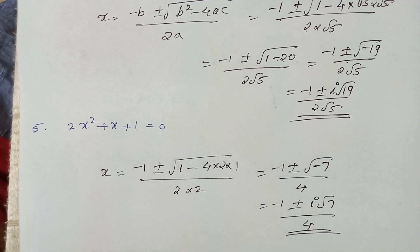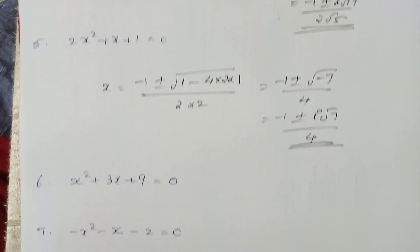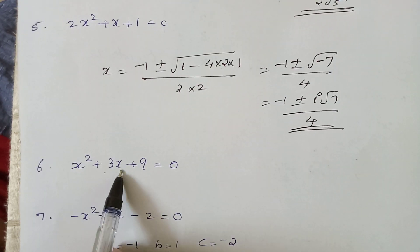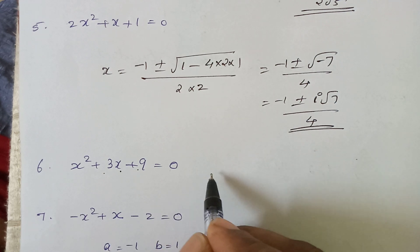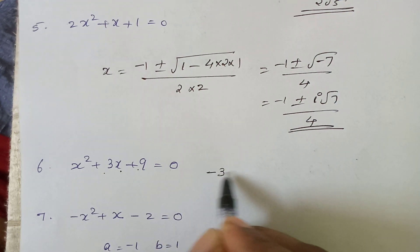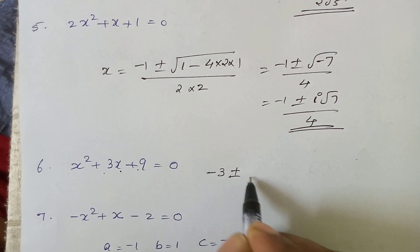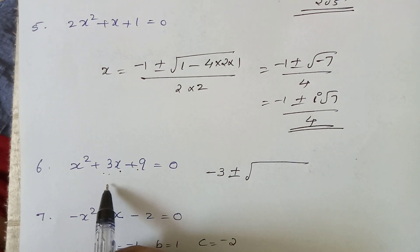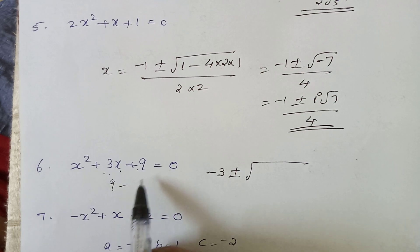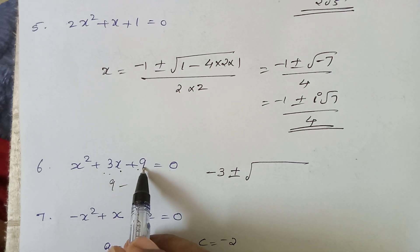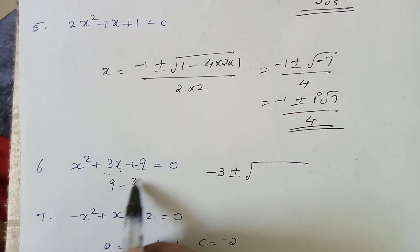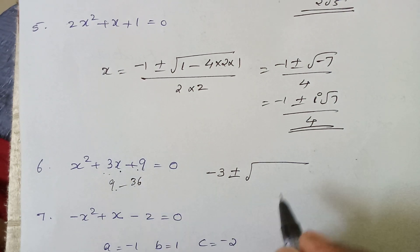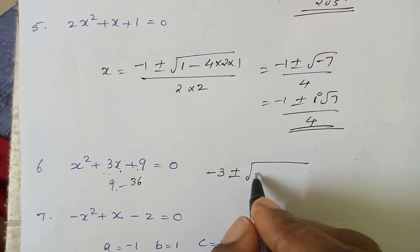For x squared plus 3x plus 9 equal to 0, x equals minus 3 plus or minus root of b squared minus 4 into 9, divided by 2 into 9.